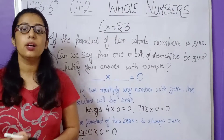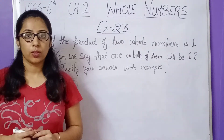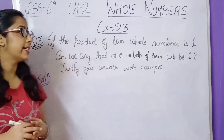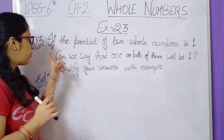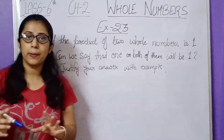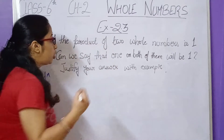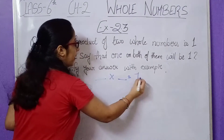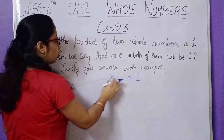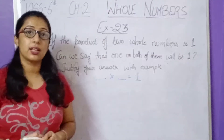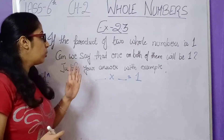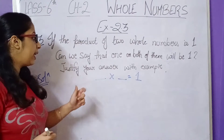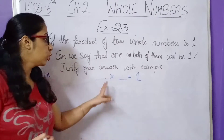Now let's move on to question number 3 of Exercise 2.3. Question number 3 is similar to question number 2, but here something is different. If the product of two whole numbers is 1, can we say that one or both of them will be 1?